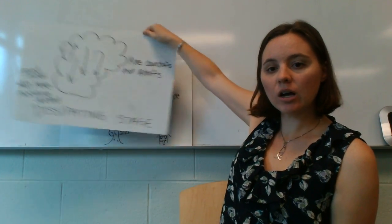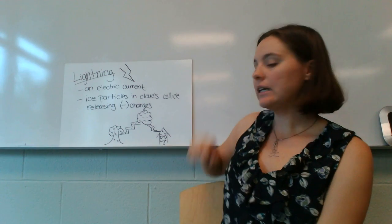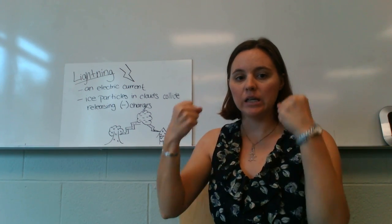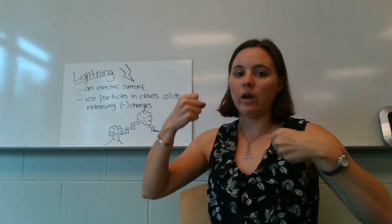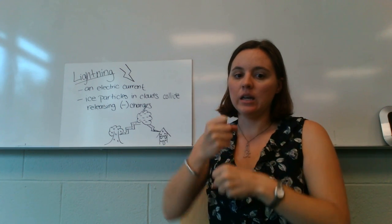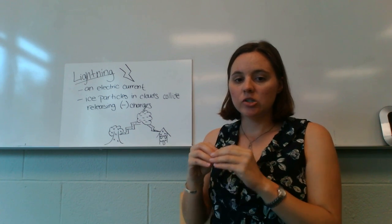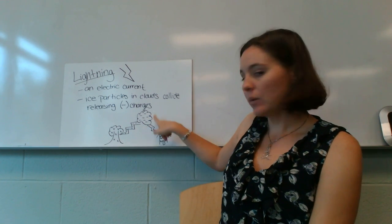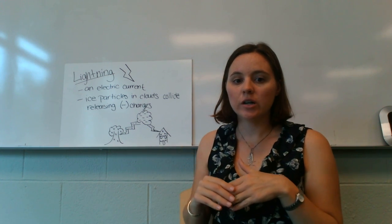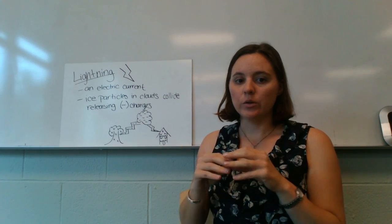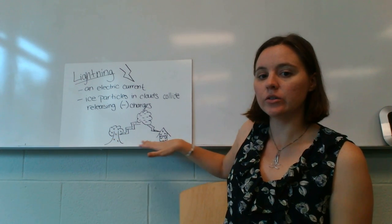Let's talk about lightning. Lightning is an electrical current that forms in clouds because ice crystals and water drops are bumping up against each other. When they bump against each other, it releases electrons. Those negatively charged electrons build up in the clouds. So we have a cloud full of negative charges, and we know that negative charges are attracted to their opposites — positive charges.